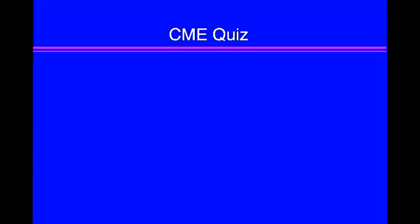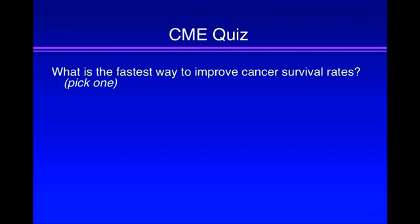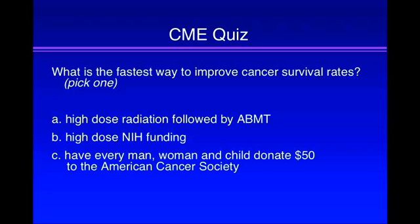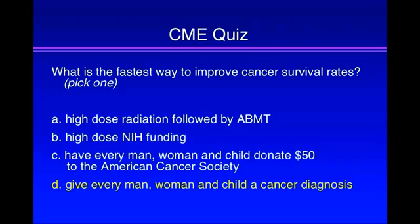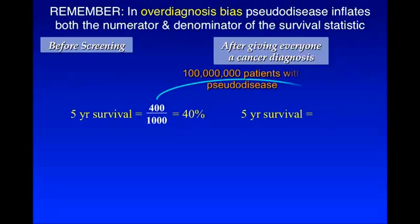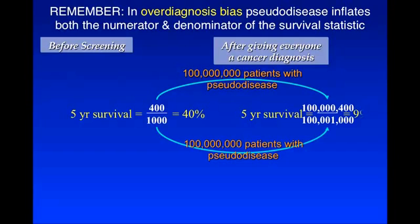There's time for a CME quiz for all the clinicians in the audience. What's the fastest way to improve cancer survival rates? Pick one. A: High-dose radiation followed by autologous bone marrow transplantation. B: High-dose NIH funding. C: Have every man, woman, and child donate $50 to the American Cancer Society. Or D: Give every man, woman, and child a cancer diagnosis. Sometimes the absurd makes the point. Of course that would increase survival rates. In over-diagnosis bias, pseudo-disease inflates both the numerator and the denominator of the survival statistic. Add 100 million patients with pseudo-disease to the numerator and 100 million to the denominator — all of a sudden, survival is virtually 100%.